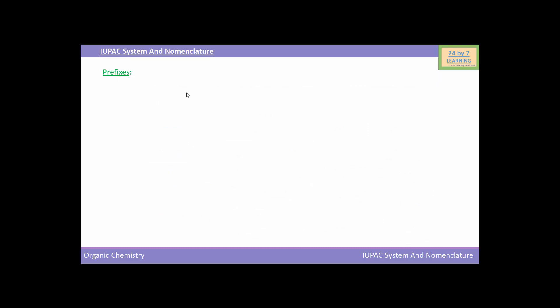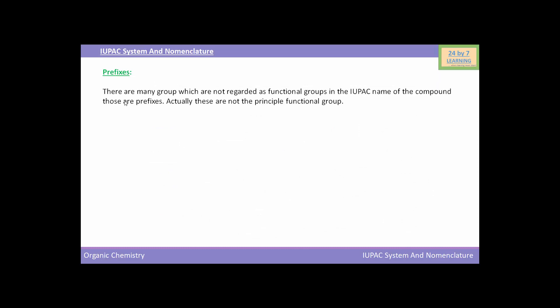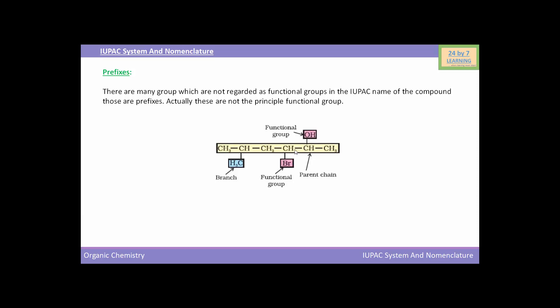Now we will see what prefixes are. There are many groups which are not regarded as functional groups in the IUPAC name of a compound — those are prefixes. These are not the principal functional group. As shown in the picture, the parent chain has a hydroxy group as the functional group while bromo is the prefix. For example, alkyl groups like methyl, propyl, ethyl, etc., are prefixes and not the principal functional groups.